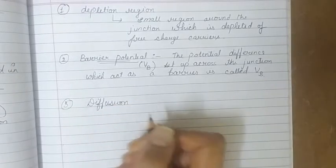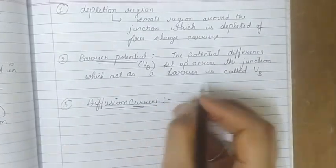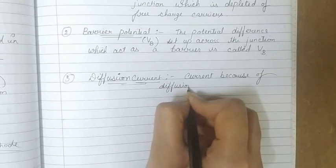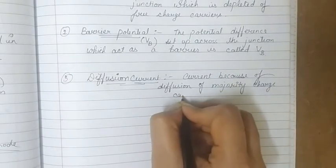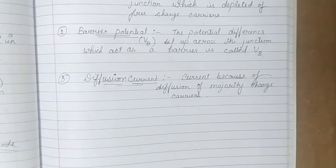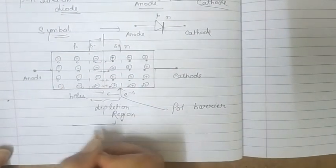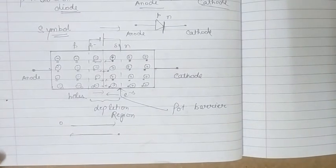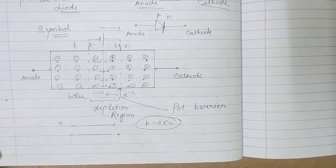The next point is diffusion current. Diffusion current is the current that we get because of the diffusion of majority charge carriers in the semiconductor. Holes are moving from p to n, and electrons are moving from n to p. The direction of diffusion current is along the positive majority charge carriers — that means the direction of diffusion current is from p to n.